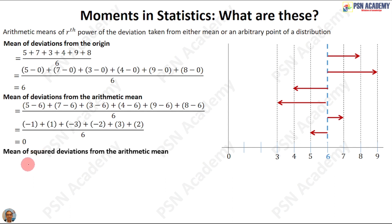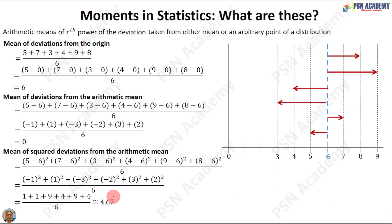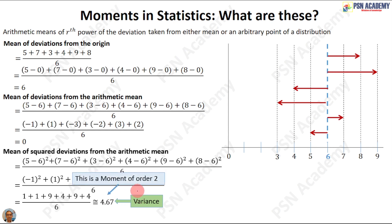Now let us go with the squared deviations from the arithmetic mean. We square the deviations we had previously: 5 minus 6 squared, 7 minus 6 squared, 3 minus 6 squared, and so on. We get 4.67. This is the mean of the squared deviations from the arithmetic mean — nothing but the variance. So variance is the moment of order 2 about the arithmetic mean.